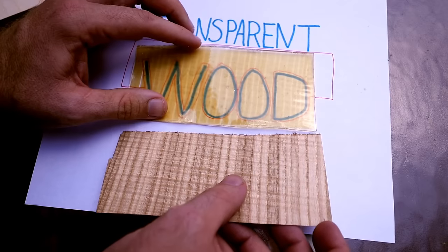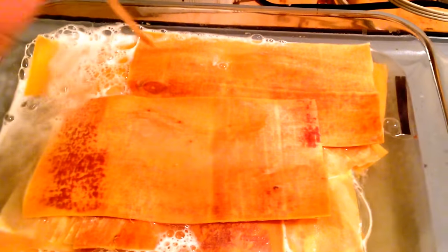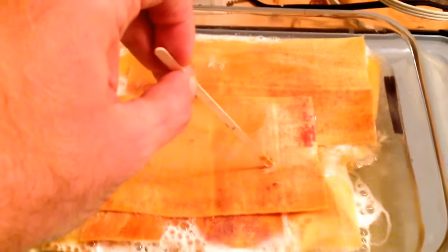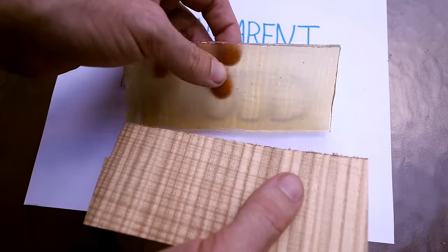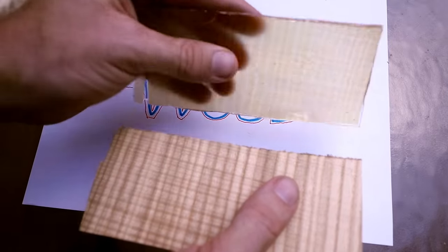You put it in a bath of sodium hydroxide and sodium sulfite, NaSO3, and you let it just cook there for about 12 hours. And that strips away all of this opaque stuff and leaves behind a kind of floppy, transparent structural cellulose.